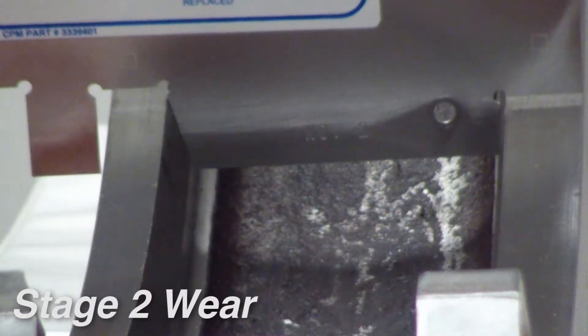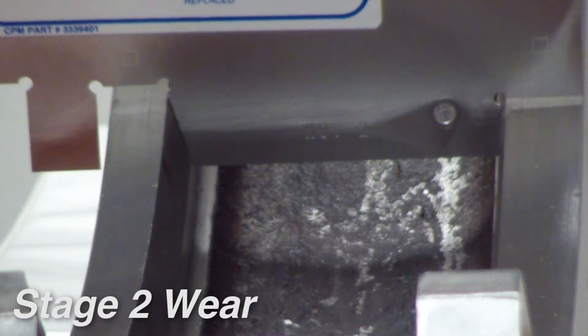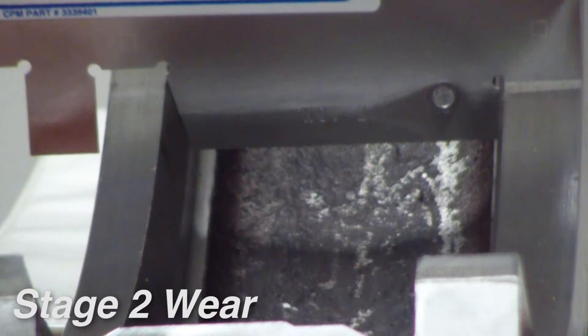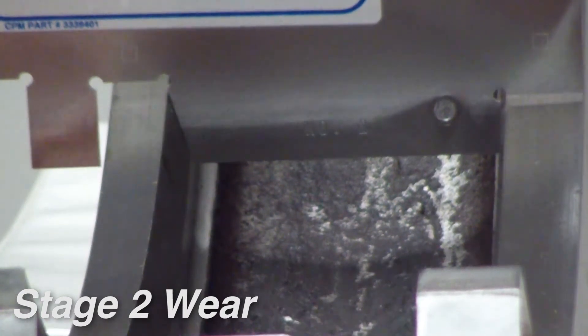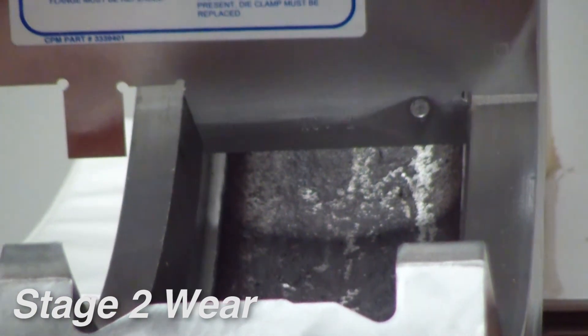If this is bottomed out on the flat square surfaces with no side-to-side movement, this clamp could only be used on a quill flange with Stage 1 wear. If there is any side-to-side movement, you cannot use this clamp at all—it would be time for a replacement.